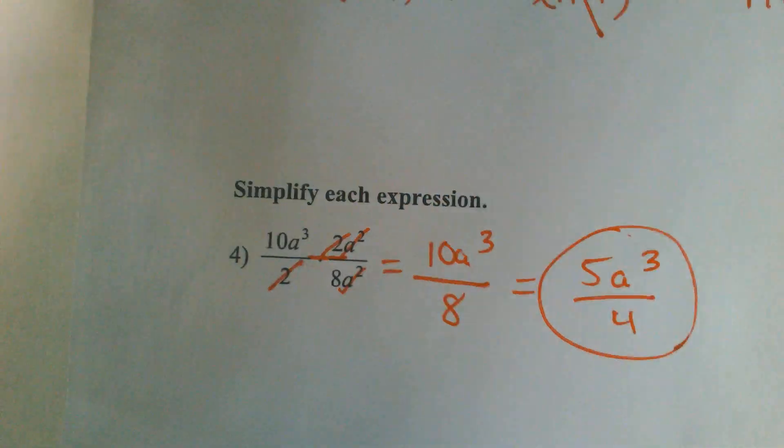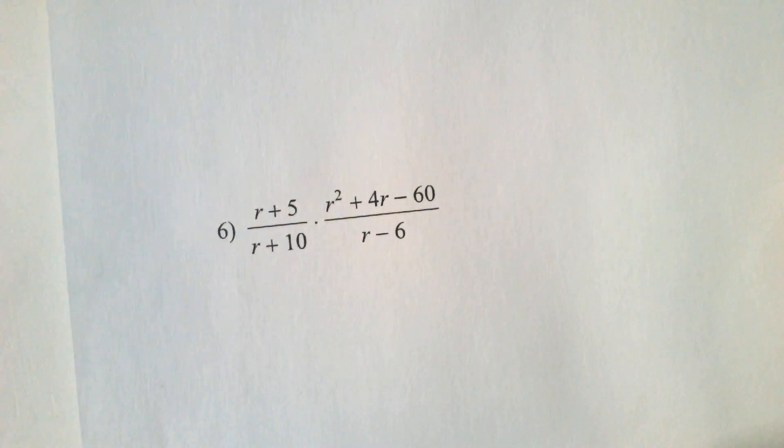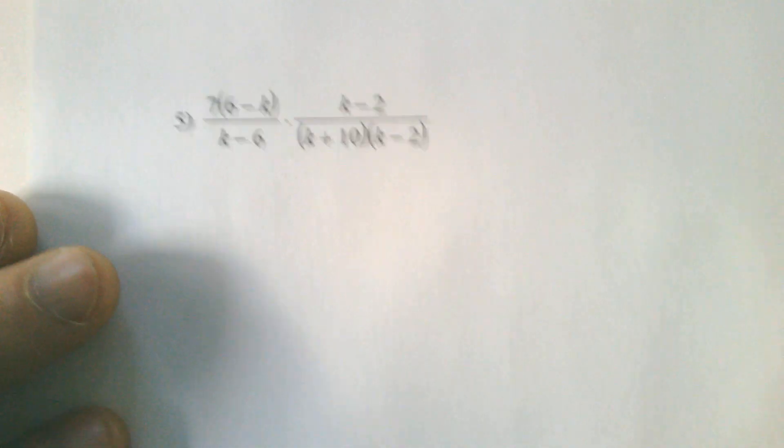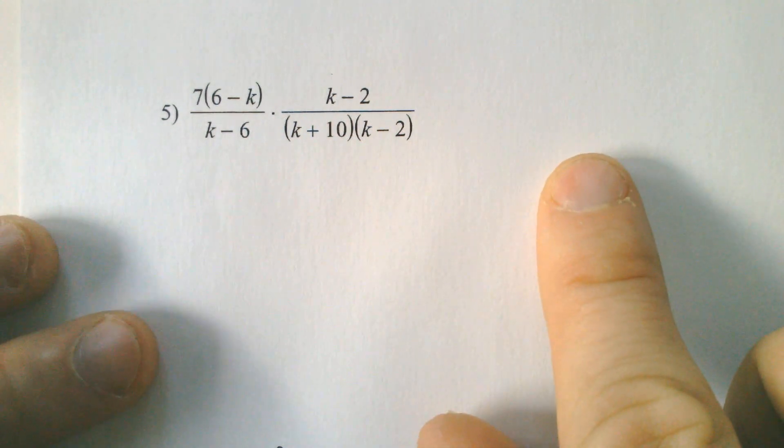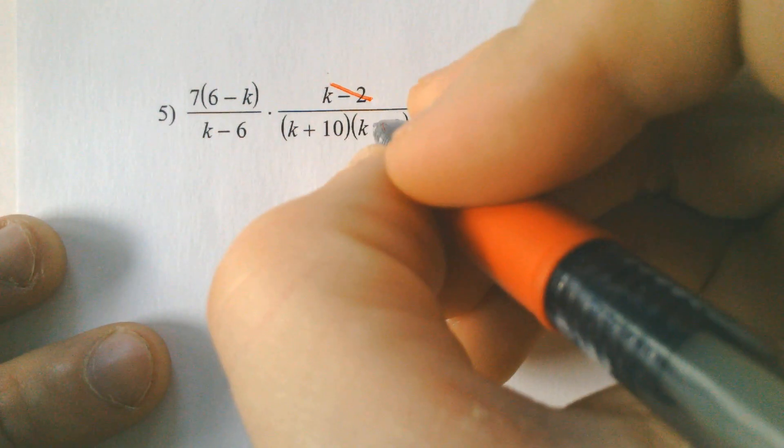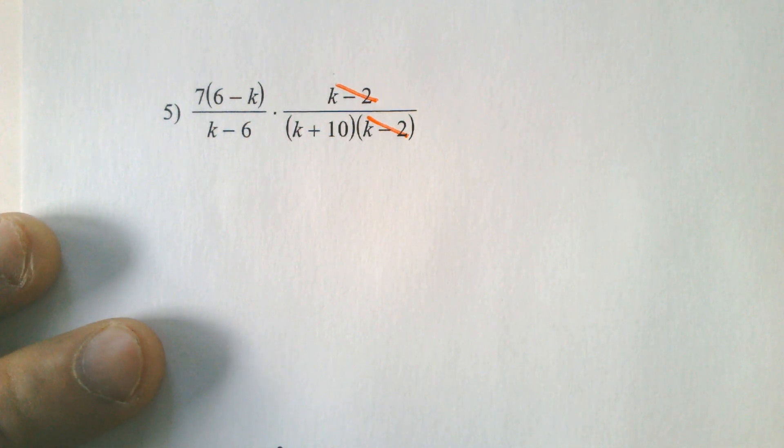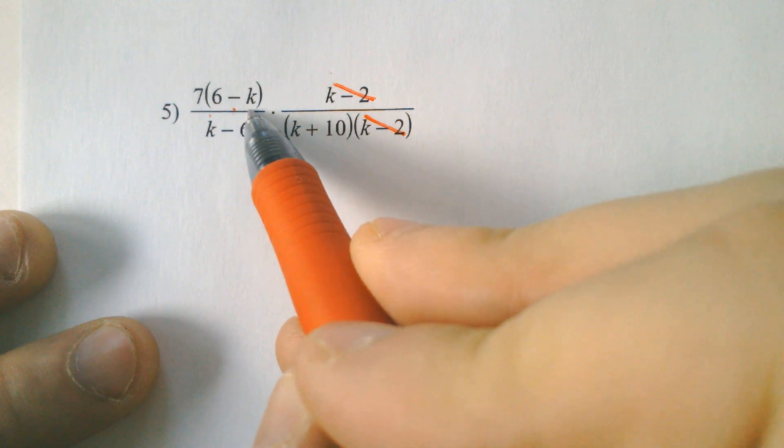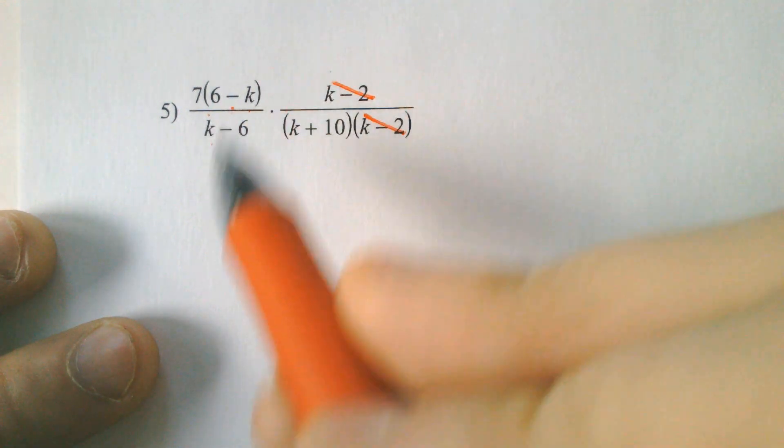Especially the next one we're doing where it's already factored for you for the most part. So here, k over k minus 2, k minus 2, they're gone. They're the same factor. You may think that the 6 minus k and the k minus 6 factor would cancel, but they don't. Not yet, at least.